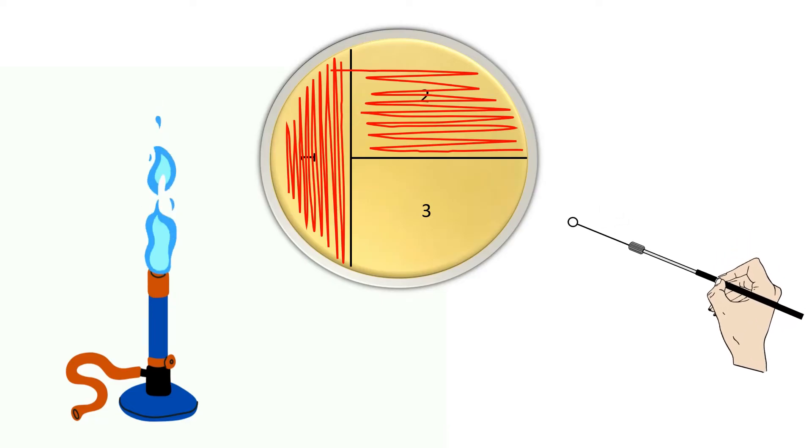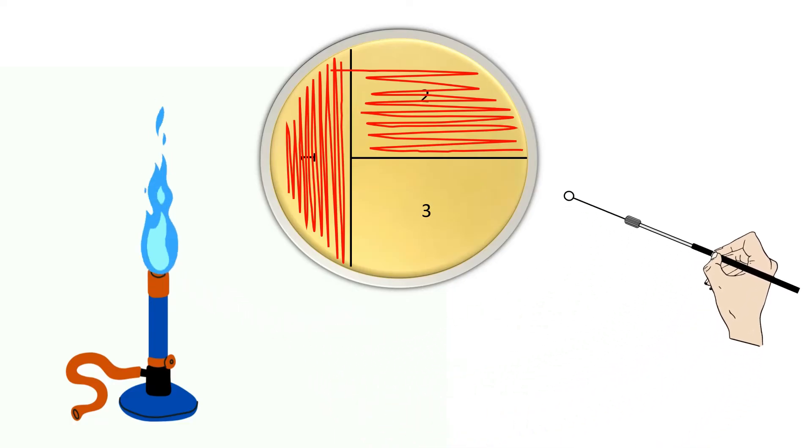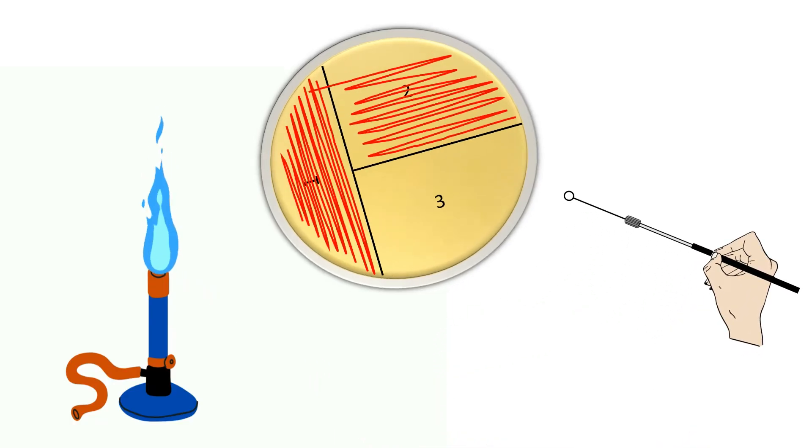Heat the wire loop again and let the wire loop cool down. Rotate the plate 90 degrees anti-clockwise.